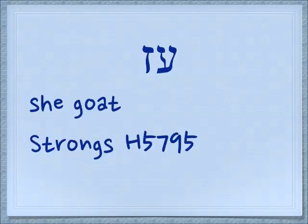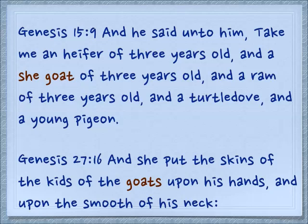These two letters together make two different words. The first one is ez, with a short E sound, and it means a she-goat. Genesis 15:9: 'And he said unto him, Take me a heifer of three years old, and a she-goat of three years old, and a ram of three years old, and a turtle dove, and a young pigeon.' Here Abraham is cutting the covenant with Yehovah.